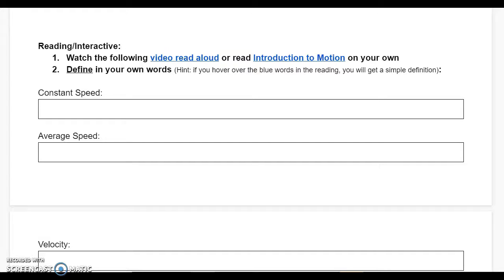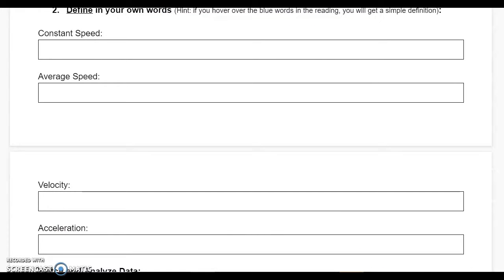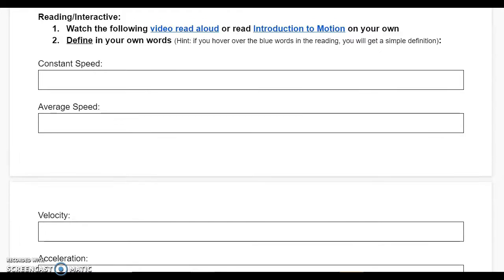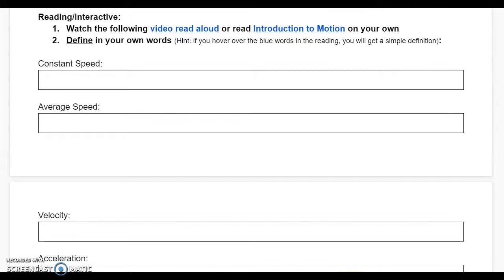As you go through the reading or watch the video, you want to look out for the following words: constant speed, average speed, velocity, and acceleration. You will be defining those in your own words in the boxes below.